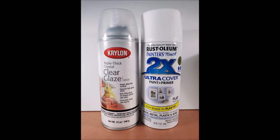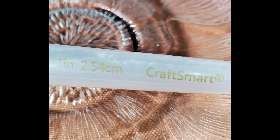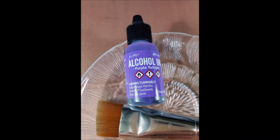Then I'm going to prime it with the Rust-Oleum Ultra Coat. I'm going to use an inexpensive brush from Craftsmart and Ranger Alcohol Ink in purple today. My husband wanted purple.